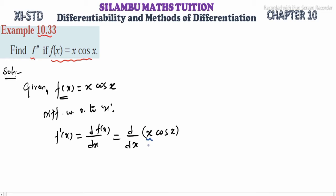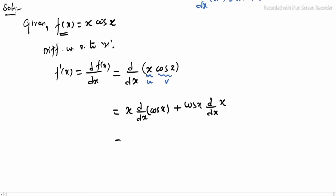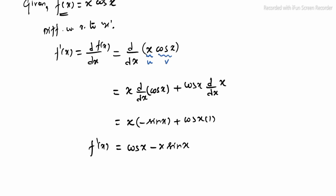Here x is u and cos x is v, so we split using product rule. d/dx(u·v) = u·v' + v·u'. Differentiating: x as it is, d/dx of cos x, which is minus sin x, plus cos x as it is, d/dx of x which is 1. So f'(x) = cos x minus x·sin x.